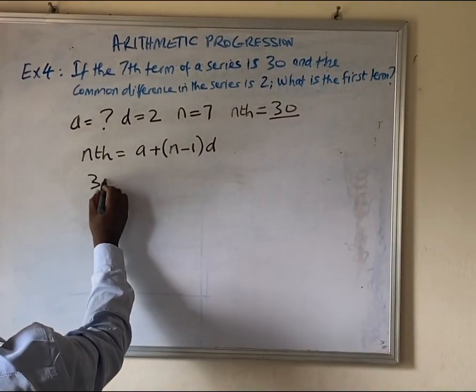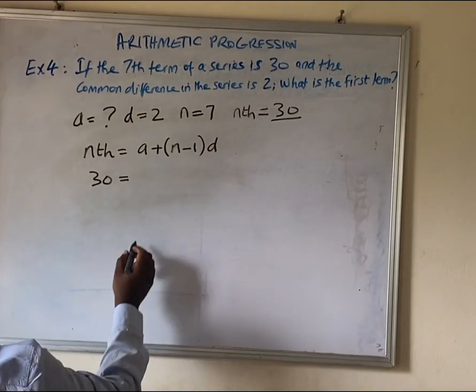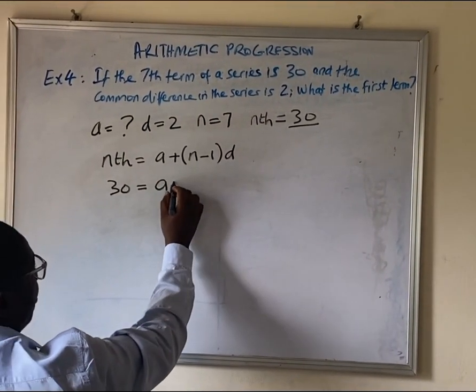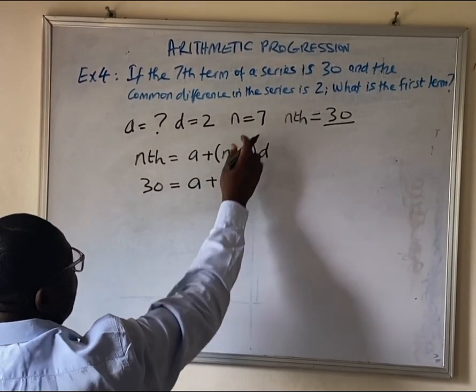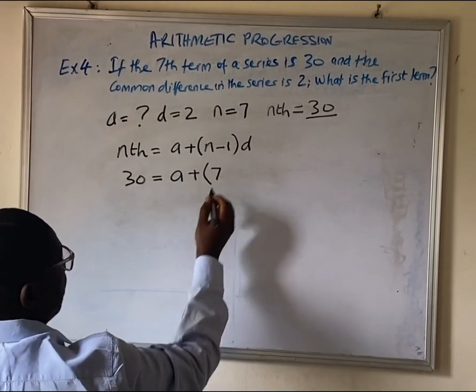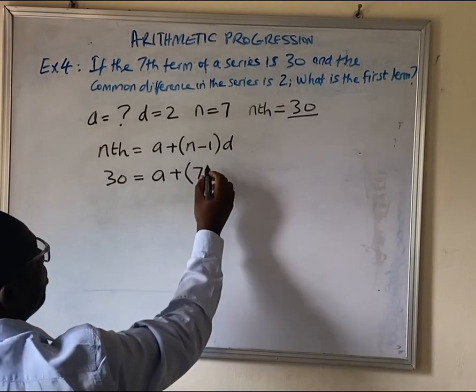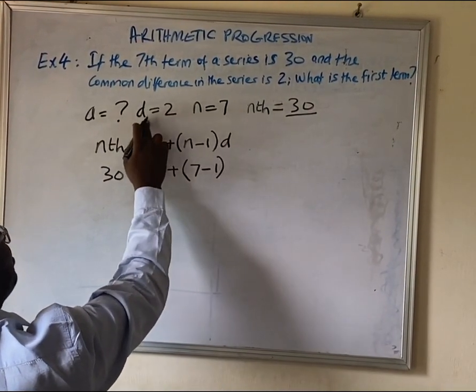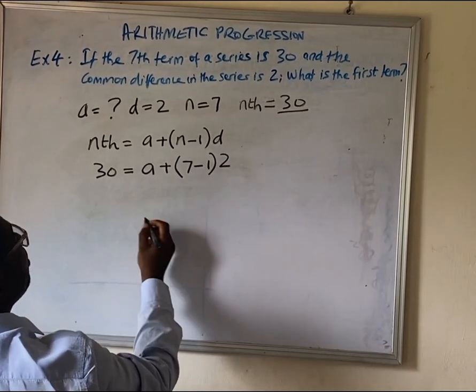So, we bring in 30 here equals to the first term which is unknown. We write a plus 7, which is given as the number we are looking for the position, minus 1, close bracket, and the difference is 2.